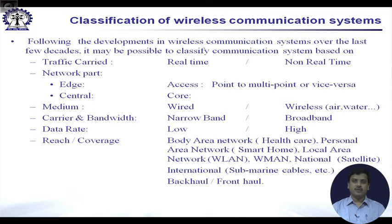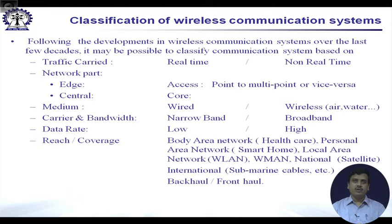The next important way of classifying networks is whether they are at the edge or at the central part. Edge means the access network; the central part is typically called the core network. For example, in LTE — the 3.9G or 4G system — the air interface between the eNodeB (base station) and user equipment is the edge, whereas the SAE evolved core network is the central part.